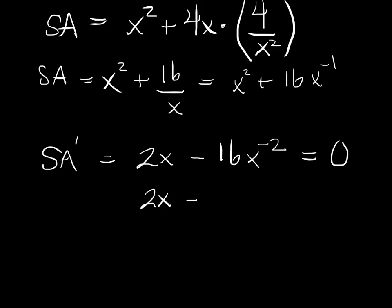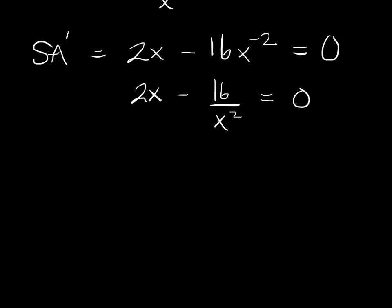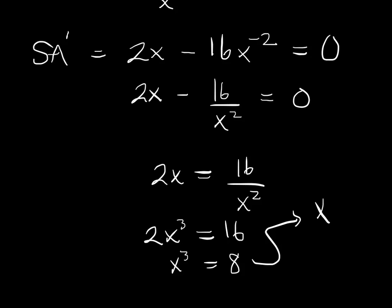2x minus 16 over x squared equals zero. 2x equals 16 over x squared. 2x cubed is 16. x cubed is 8. In other words, x is 2.